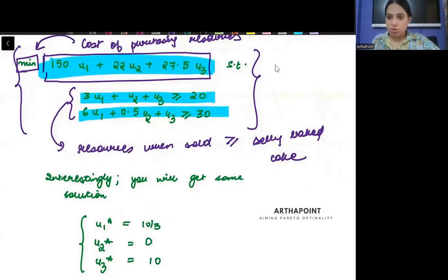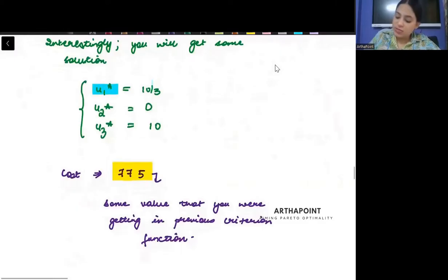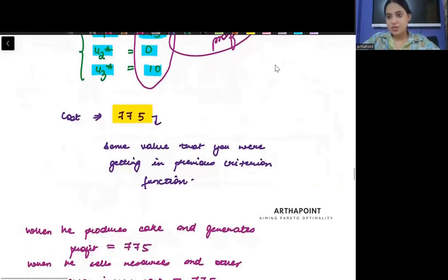The book does not do that, but the book says that when you will solve, then you will get the same solution. U1* will come down as 10/3, U2* as 0, and U3* as 10. So you will get the same answer that you were getting there as marginal profit.